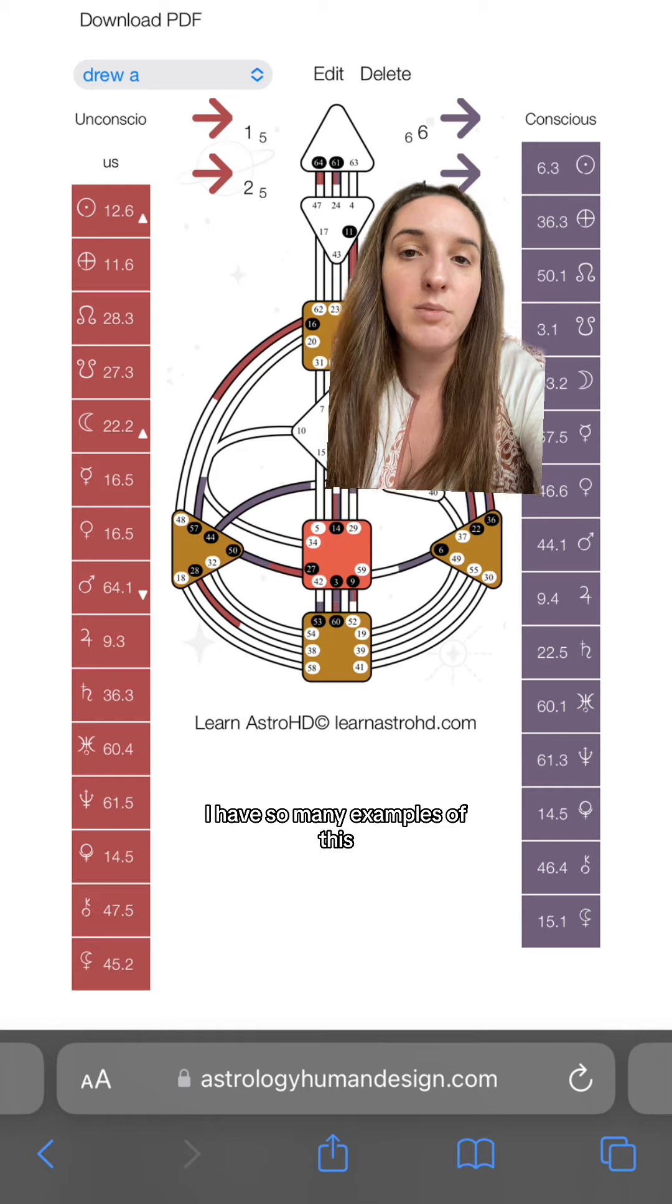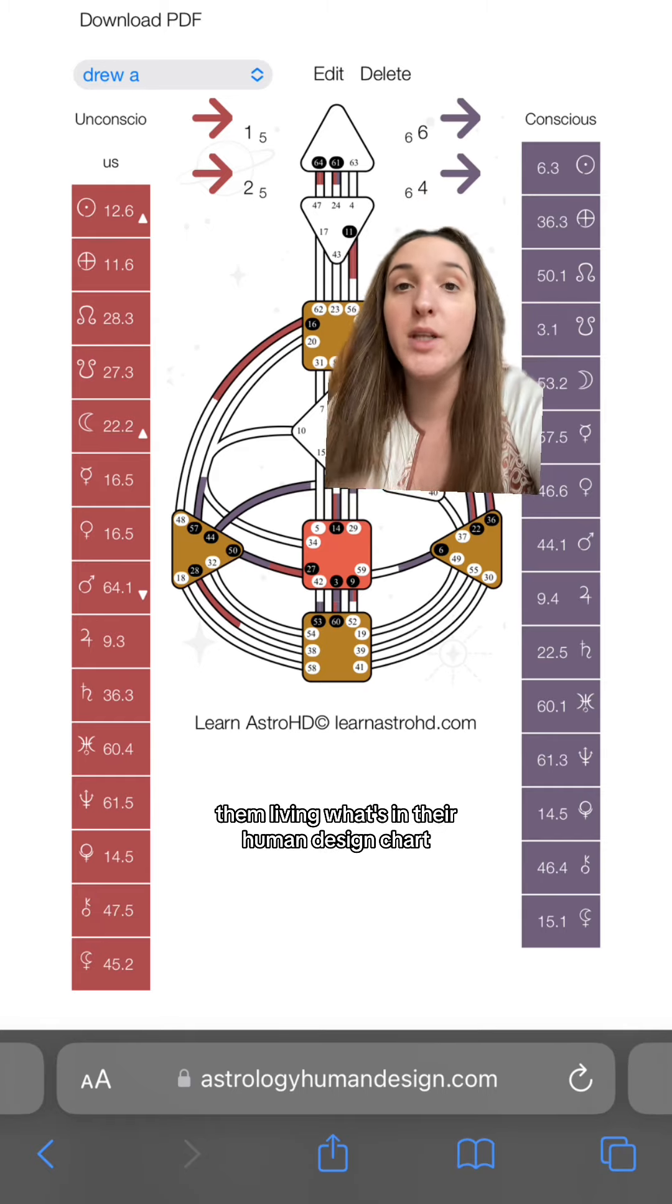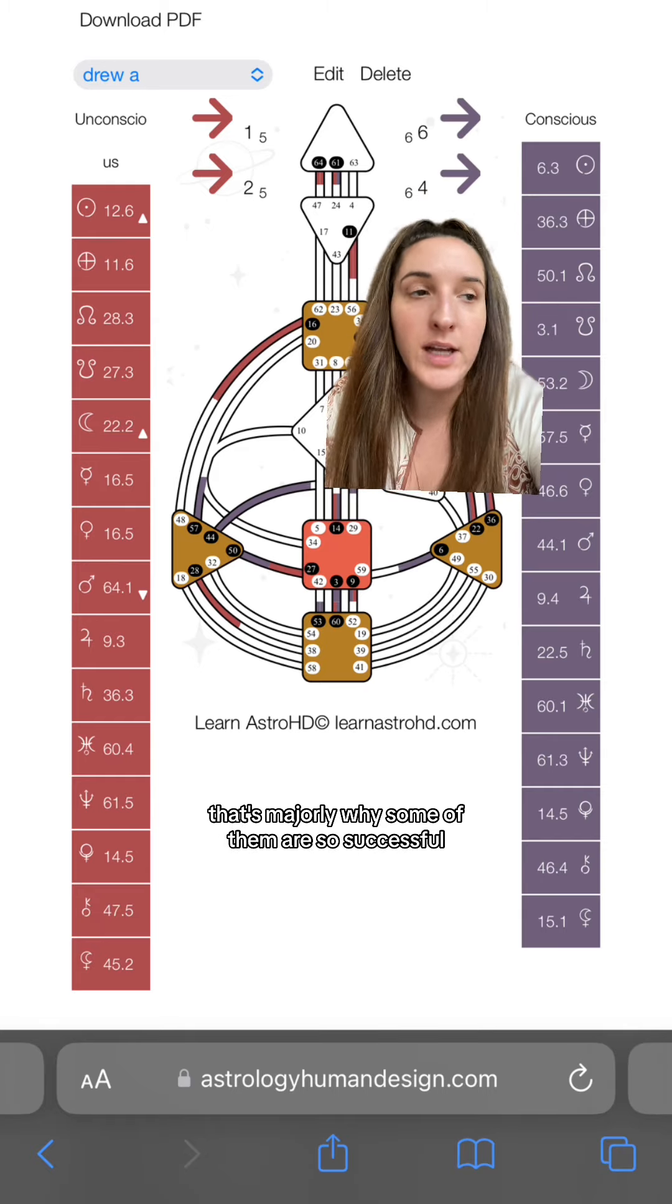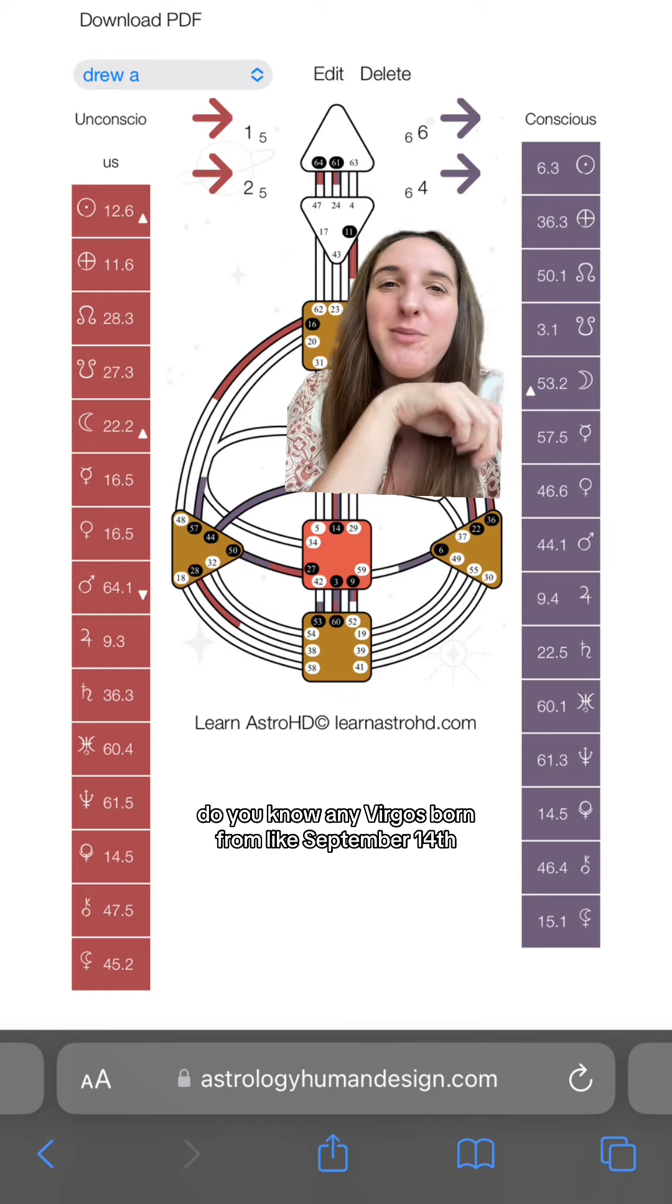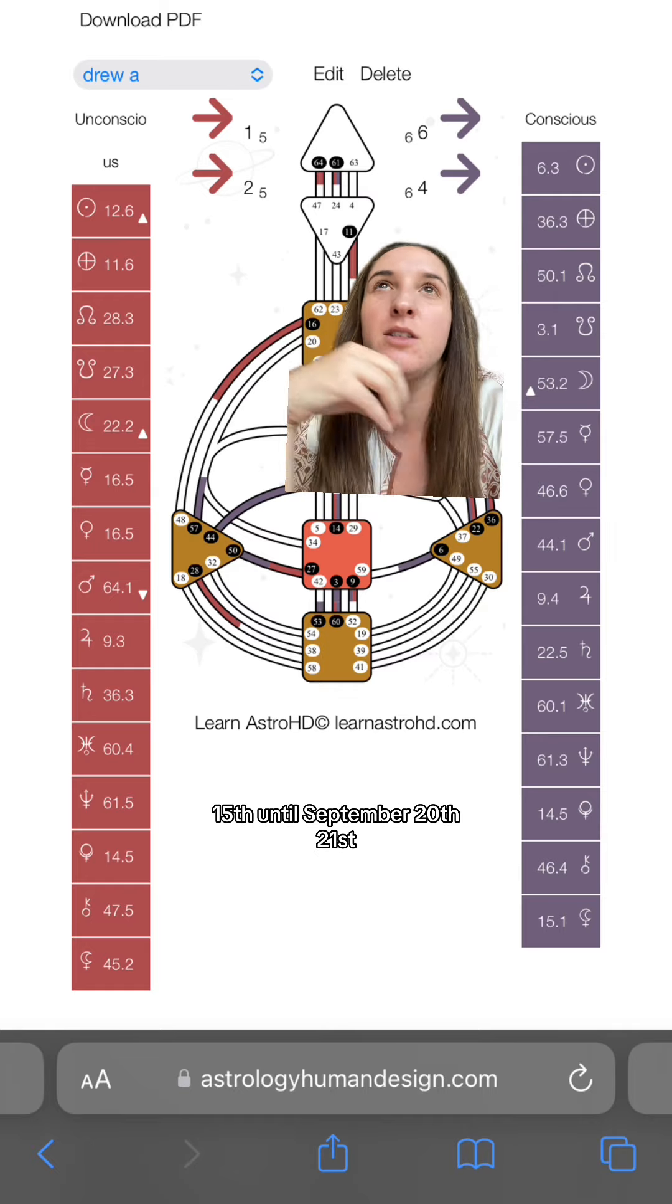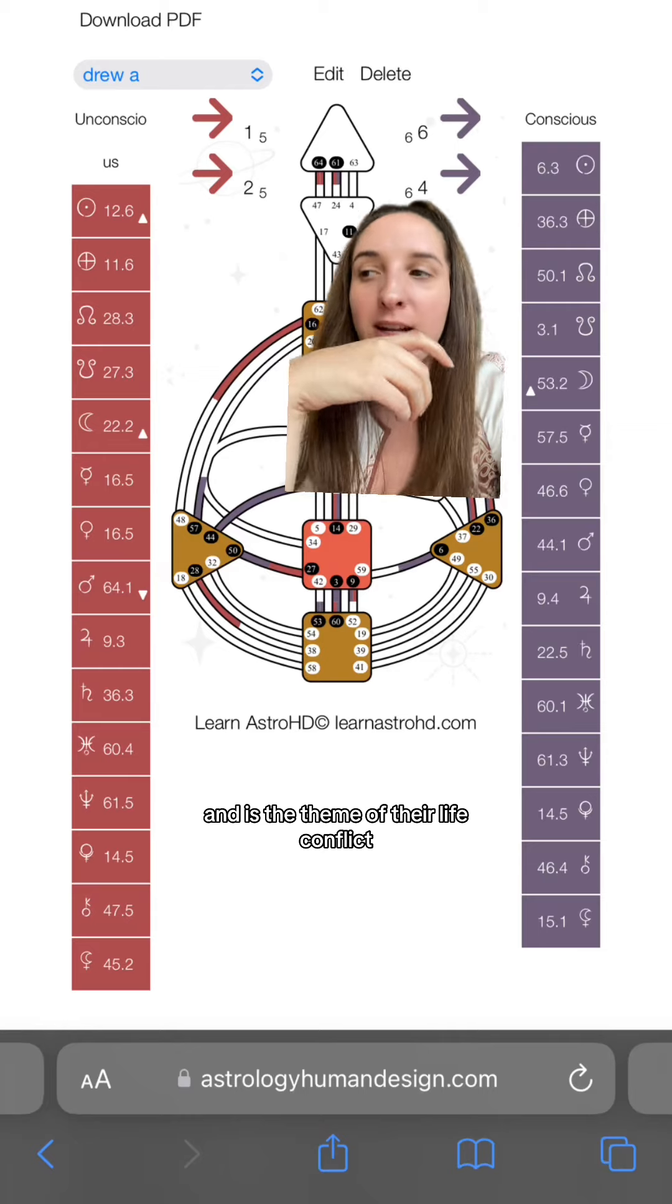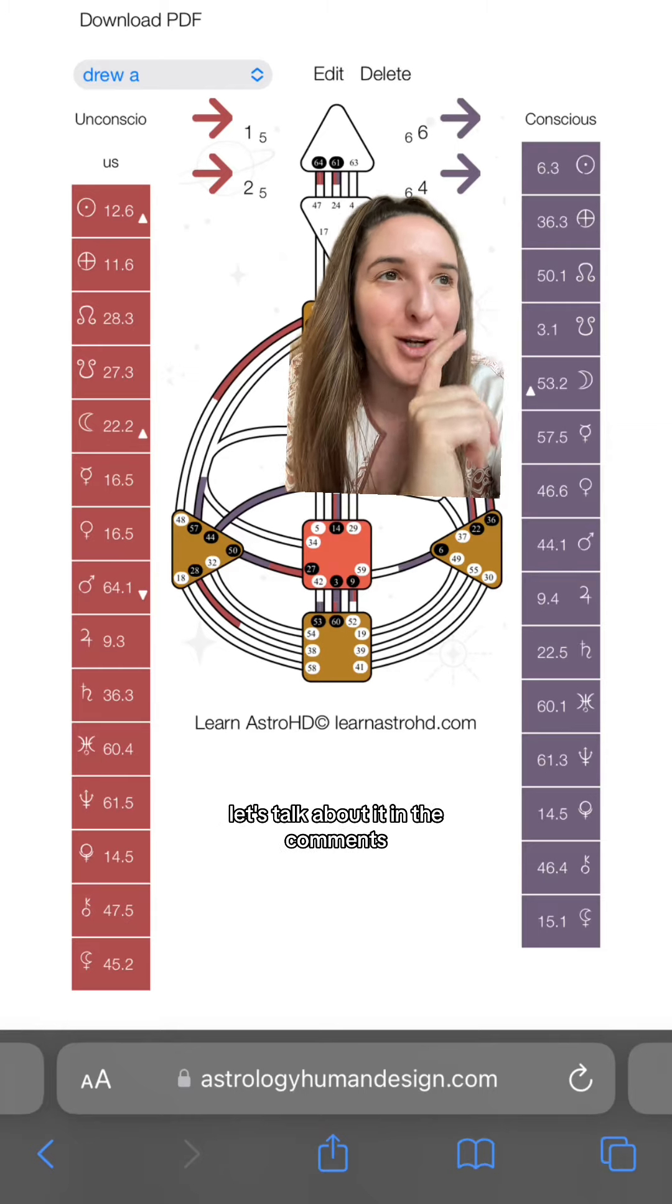I have so many examples of this, like from celebrities living what's in their human design chart. That's majorly why some of them are so successful. Do you know any Virgos born from like September 14th, 15th until September 20th, 21st, and is the theme of their life conflict? Let's talk about it in the comments.